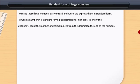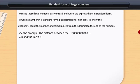See the example: The distance between the sun and the earth is 150 billion meters. In standard form,